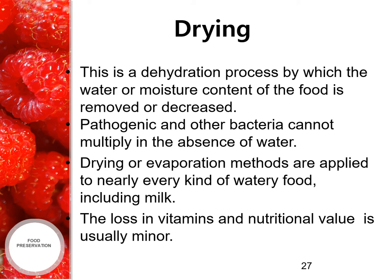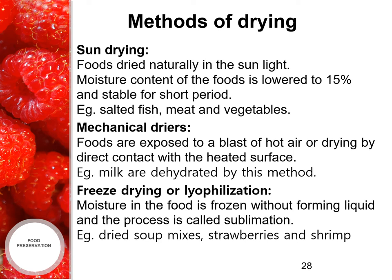The third method in long-term storage is drying. This is a dehydration process by which the moisture content of the food is removed or decreased. Pathogenic and other bacteria cannot multiply in the absence of water. Drying or evaporation methods are applied to nearly every kind of food including milk. The loss in vitamins and nutritional value is usually minor. The first method is sun drying — food dried naturally in the sunlight; moisture content of the food is lowered to 15% and stable for a shorter period. Examples include salted fish, meat and vegetables.